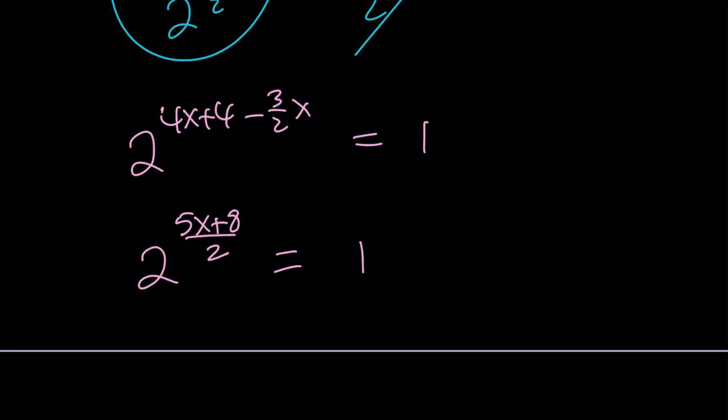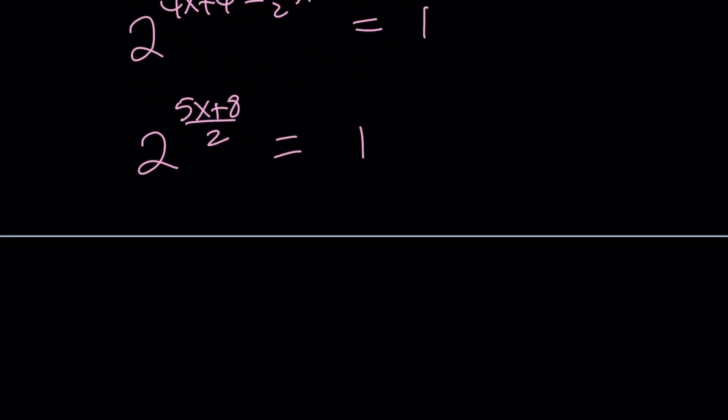Now, to find complex solutions, I'm going to write 1 as a complex number in polar form. But not only that, I'm also going to write 2 as a complex number in polar form. So 2 is e to the power ln 2. Remember that. And remember Euler's formula.